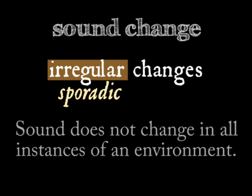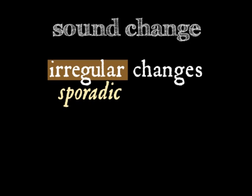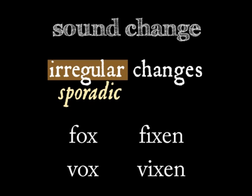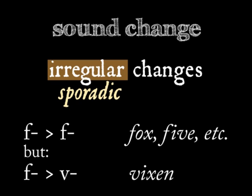Let's take an example from English. Some older dialects of English pronounced the word for a male fox as 'fox' and the word for a female of the species as 'fixen.' In other dialects, the two words started with a 'v.' Thanks to dialect mixing, modern English speakers inherited a bit of both, leaving us with 'fox' and 'vixen.'